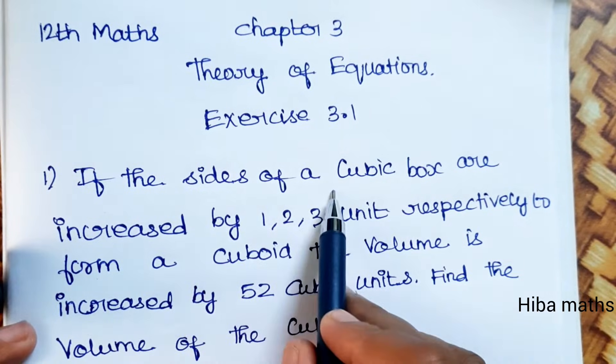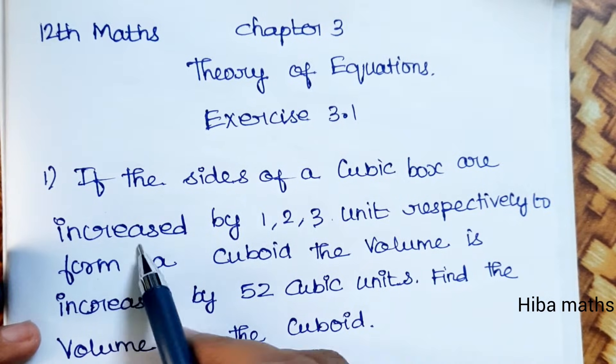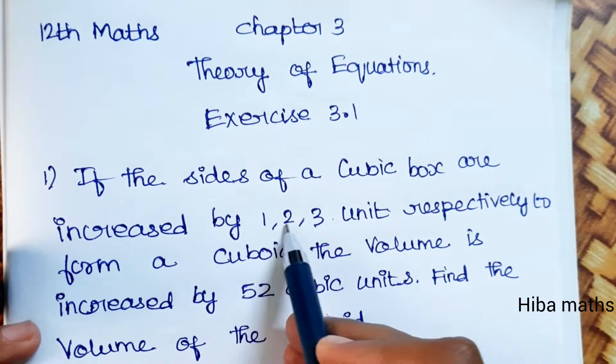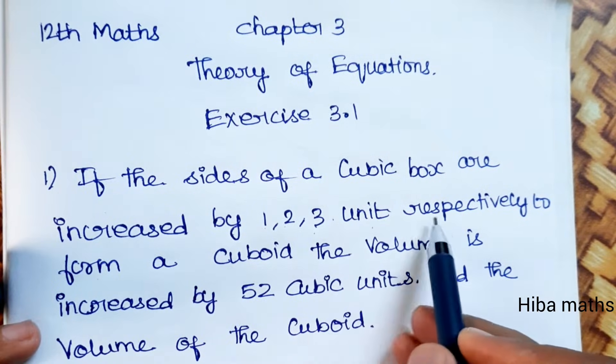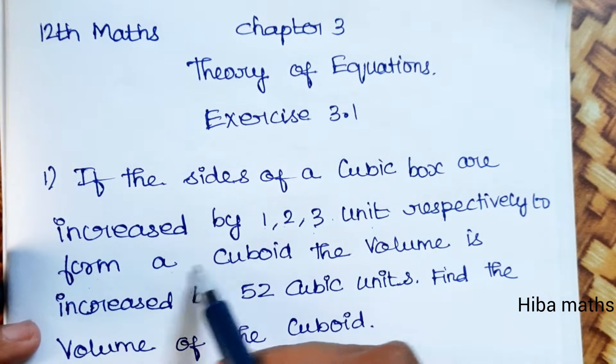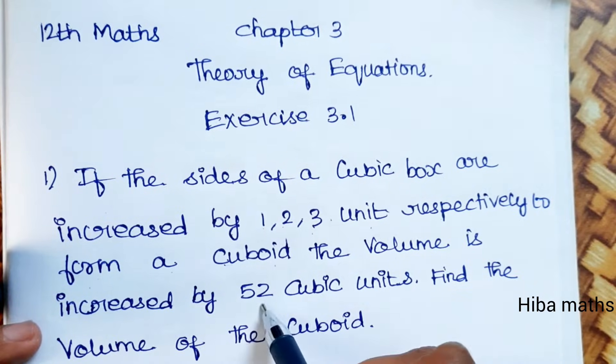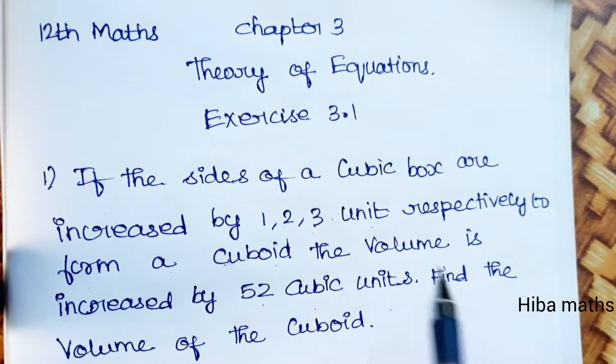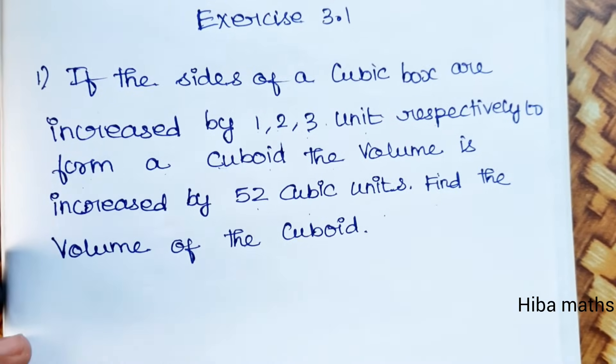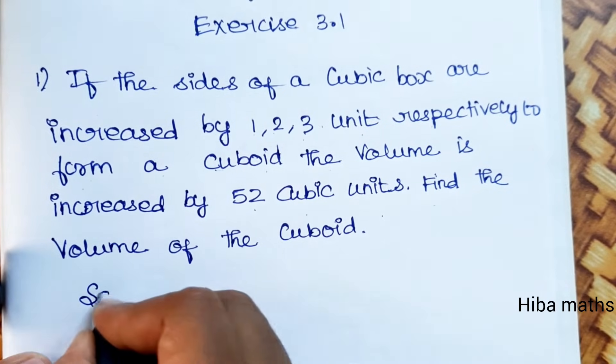If the sides of a cubic box are increased by 1, 2, 3 units respectively to form a cuboid, the volume is increased by 52 cubic units. Find the volume of the cuboid.